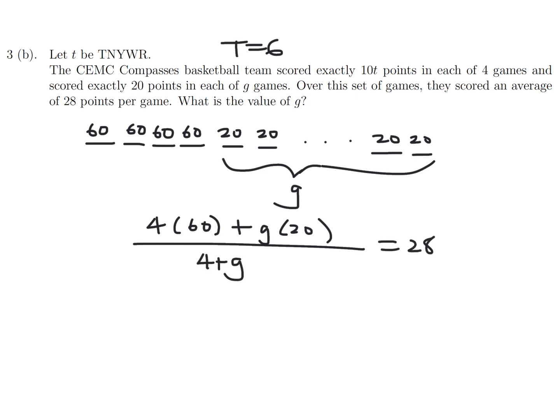So 4 times 60, plus g times 20, divided by 4 plus g, and they're telling you that's 28. So that's the math. That's the equation. So this would be 240 plus 20g is 112 plus 28g. So that means 8g is 128, and therefore g would be 16.